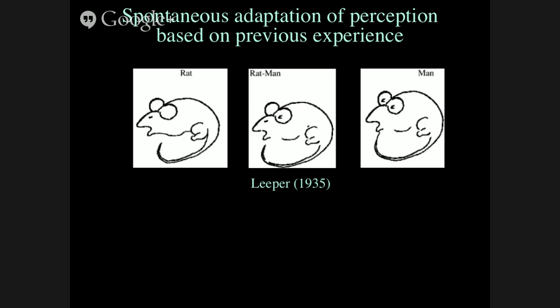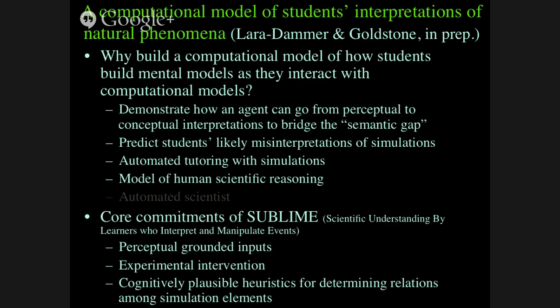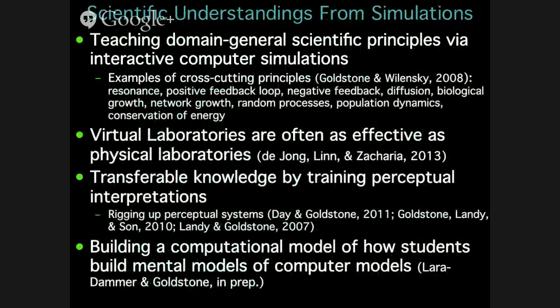We know from research that if you give people experience with the rat-man ambiguous form, but preceded it with an unambiguous rat, they'll naturally interpret it as the rat. Whereas if preceded by the man image, they'll interpret it as a man. That's the kind of latent perceptual priming we're talking about. This has led us to something that seems ridiculously meta: we're interested in building a computational model of how students build mental models when confronted with computer models of natural phenomena.